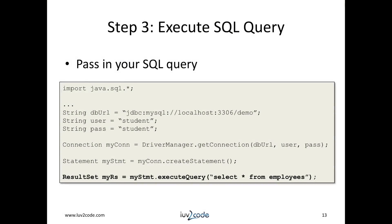In step three, we'll use the statement object to execute a SQL query. In this example, I'll call myStatement.executeQuery("SELECT * FROM employees"). This will return a result set object assigned to myRS. Remember, we can pass in any SQL query that supports ANSI SQL 2003 — inner joins, outer joins, or any complex SQL query. The SQL string can be hard-coded or you can pass in a string object that you build dynamically.